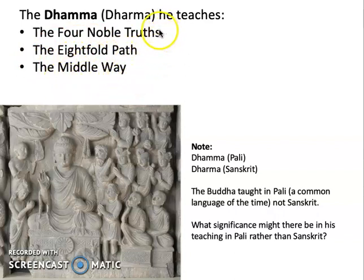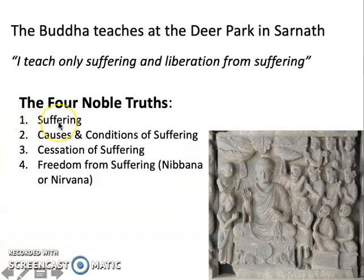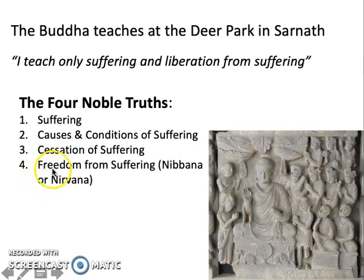There are lots of numbered lists in Buddhism; these are the primary ones. The first noble truth is suffering — the fact that in this life, inevitably, everyone experiences suffering. Two, the causes and conditions of suffering: what causes suffering and how does it come into being? Three, cessation: how do you stop suffering, how do you end it? We're in a world of pervasive suffering — how do we end that? And the fourth is the experience of freedom from suffering. In Pali, this would be Nibbana; in Sanskrit, Nirvana. That is the definition of Nirvana — liberation from suffering.